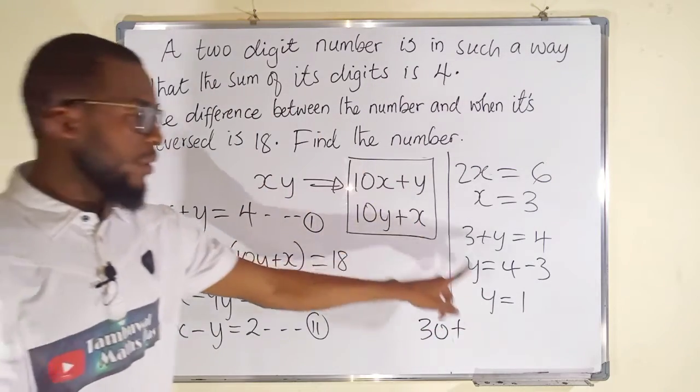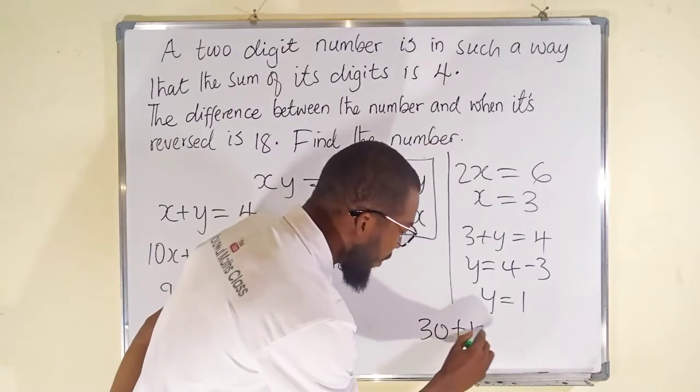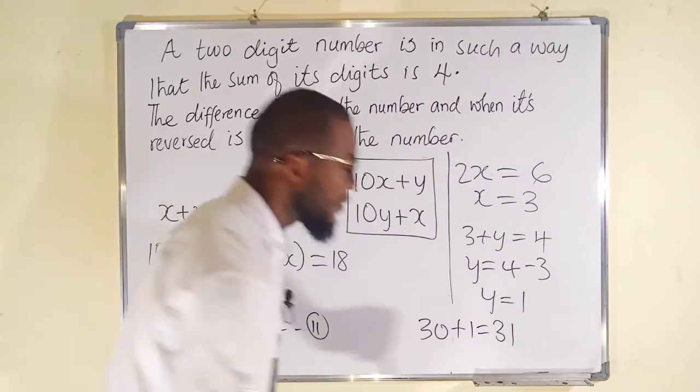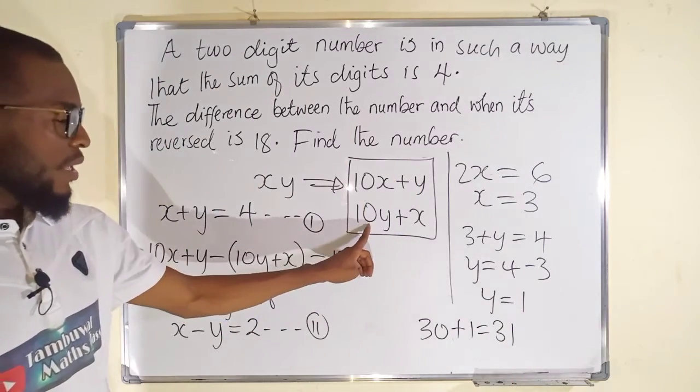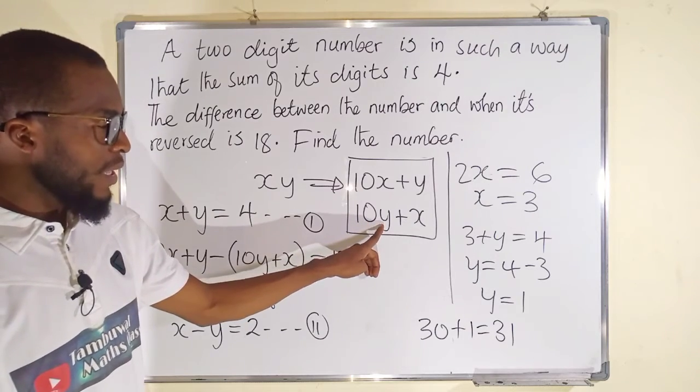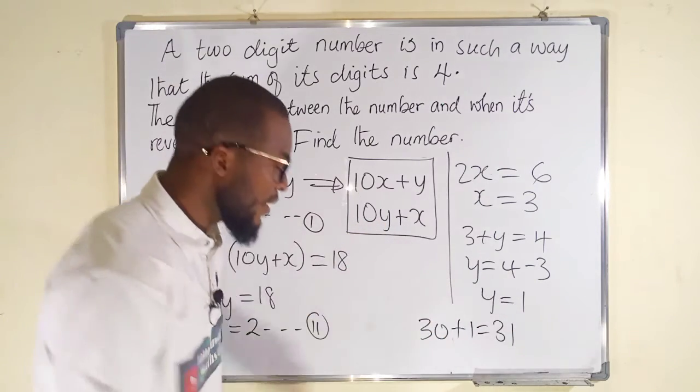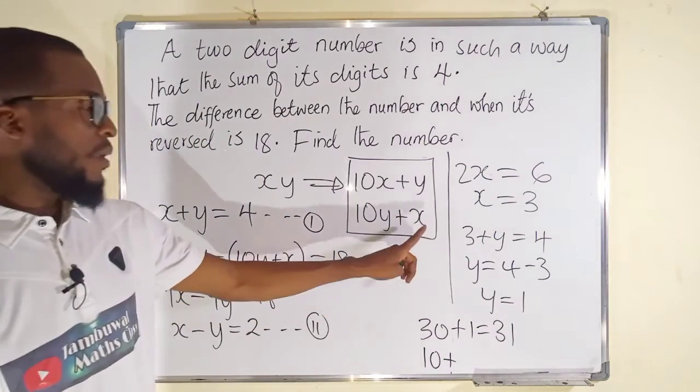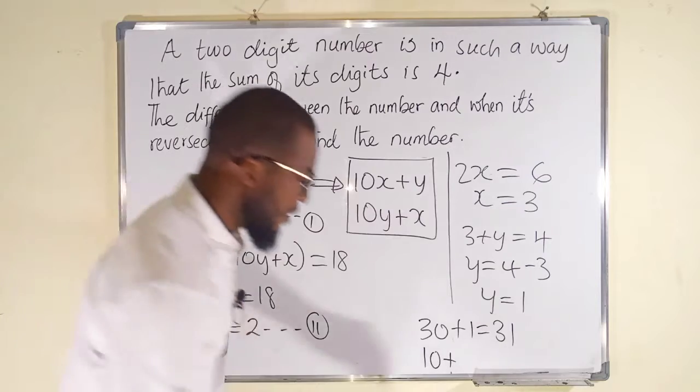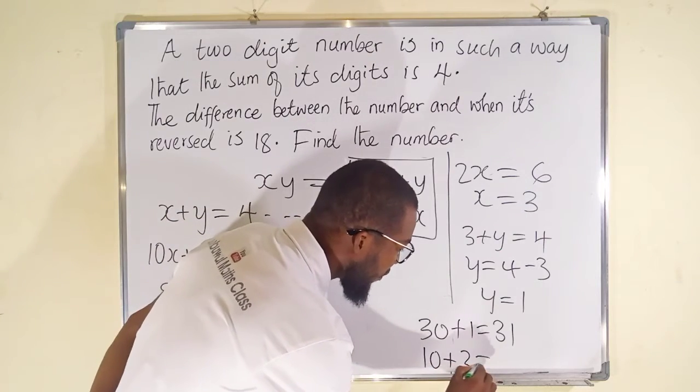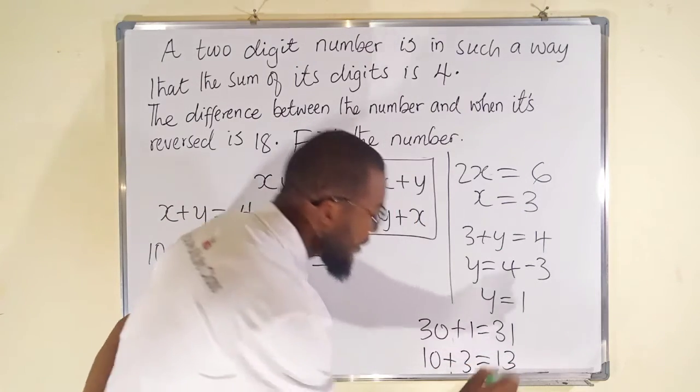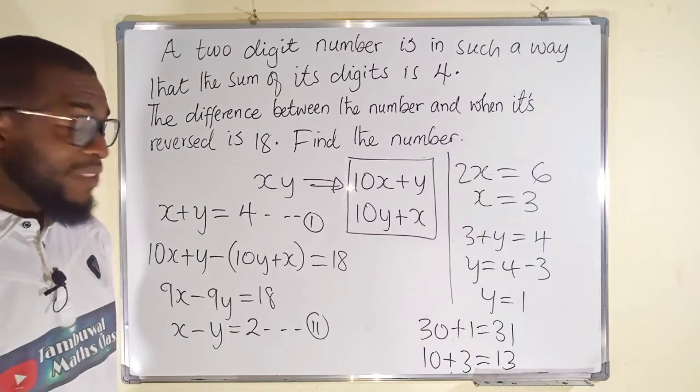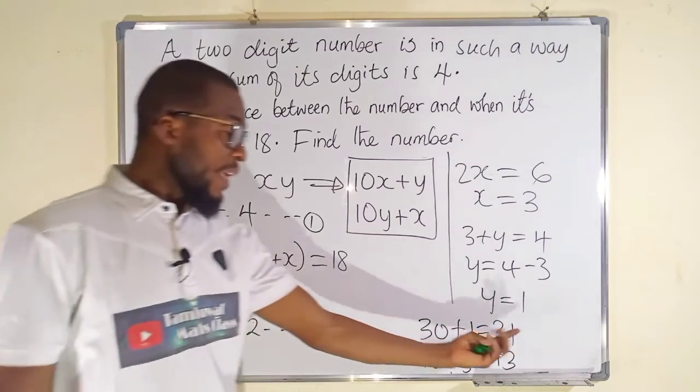Plus Y, and Y is 1, and this is equal to 31. The same thing, you can plug it here. You have 10 multiplied by Y, 10 multiplied by 1 is 10, plus X. X is 3, and this is equal to 13.